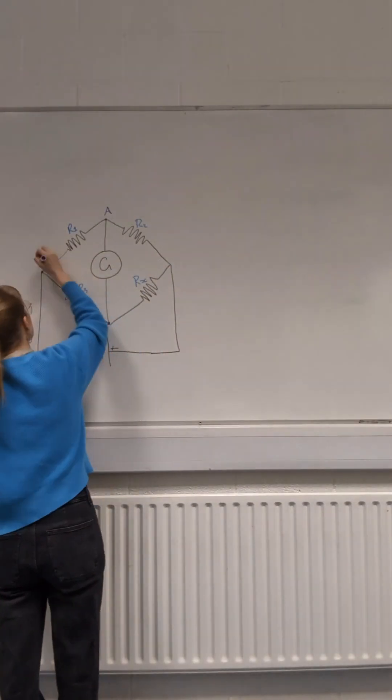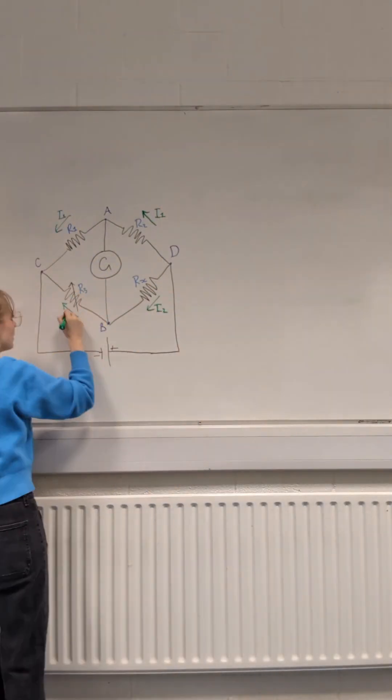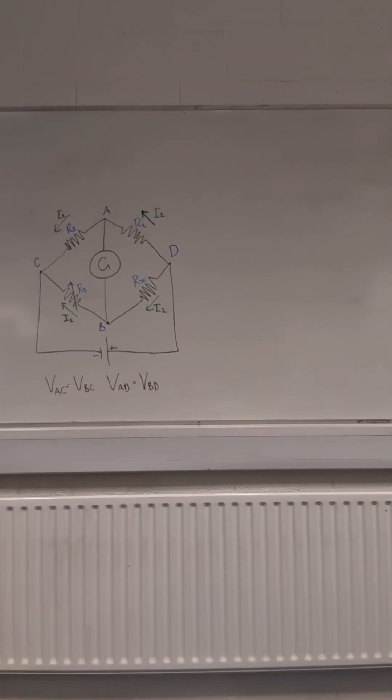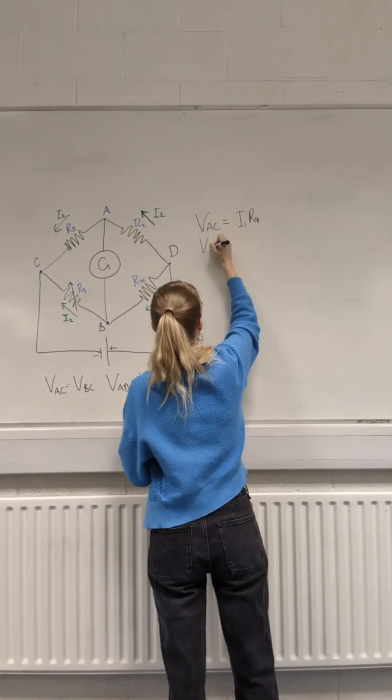Now that the Wheatstone Bridge is balanced, there's a couple conclusions we can make. Applying classical Ohm's law, we can know what the voltage, current, and resistance is at any point, or an expression for it anyway.